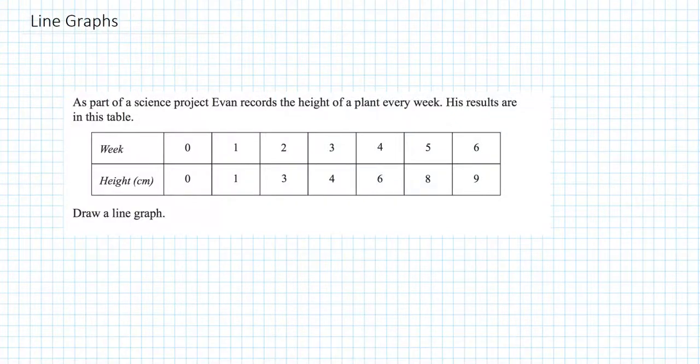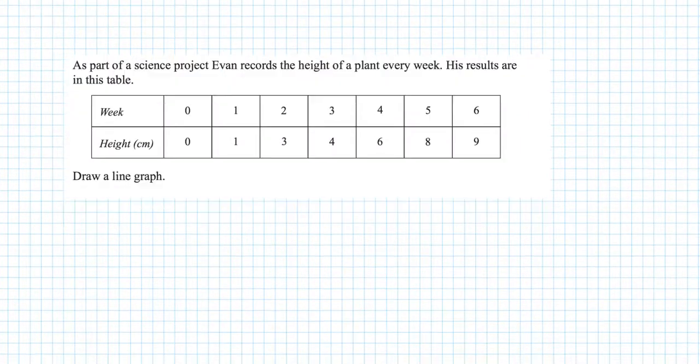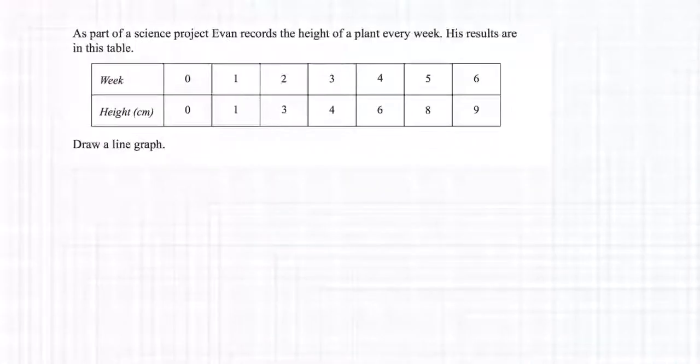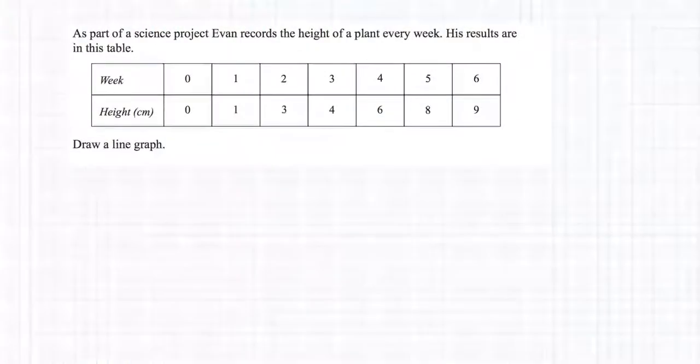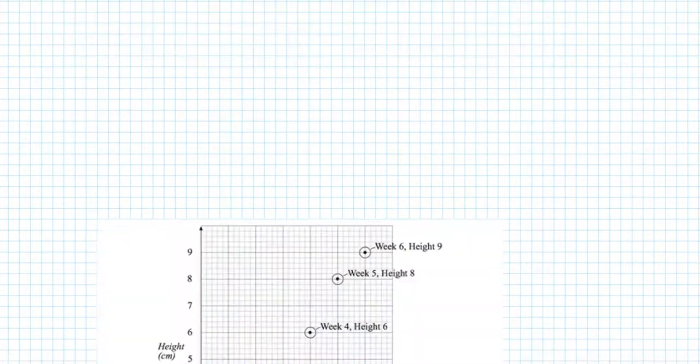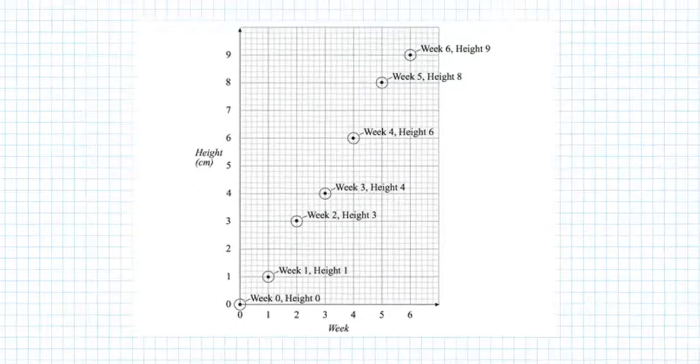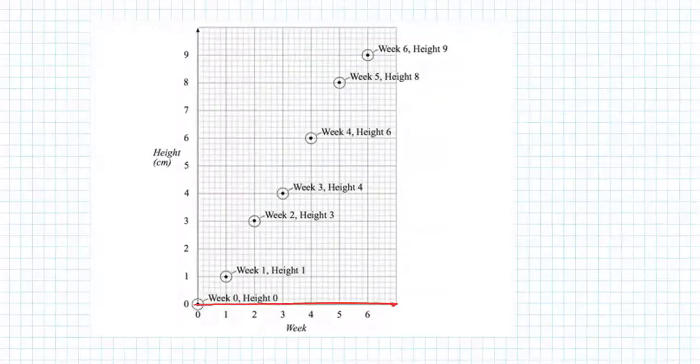We're going to draw some axes and it's important that the time axis goes horizontal along the bottom and anything else goes up the side vertically. So we're going to have weeks across the bottom and height going up. It's important that we space things out evenly. This isn't the finished line graph but it's going to get us started. We have drawn along that x-axis, that horizontal axis, the weeks and going up we have drawn the heights.